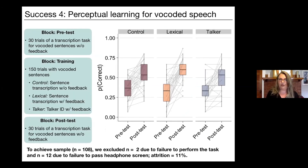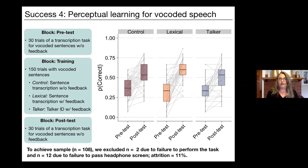Success number four was perceptual learning for noise vocoded speech. This is the longest experiment we've run online, taking between 35 and 40 minutes to complete. It consisted of a pre-test and post-test block of 30 trials each, where listeners typed back what they heard for noise vocoded sentences — a transcription task. In between, listeners completed 150 trials hearing noise vocoded sentences, with the task differing according to one of three training groups. We successfully replicated perceptual learning: keyword accuracy is higher at post-test compared to pre-test for all three listener groups.